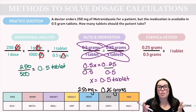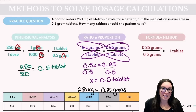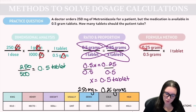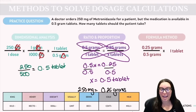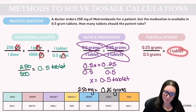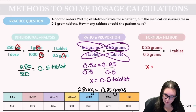Now we plug the values into the formula method: desired over have, multiplied by quantity. We have 0.25 grams desired, over 0.5 grams on hand, multiplied by one tablet. Just as we calculated before, x equals 0.5 tablets.